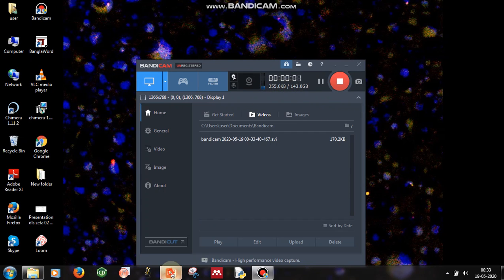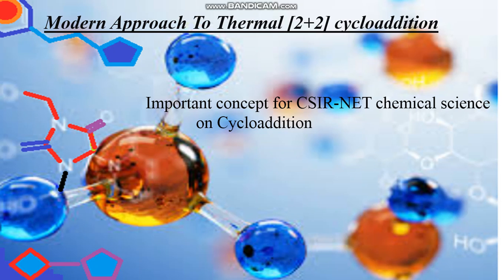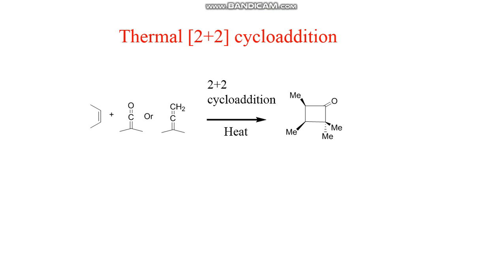Welcome to another video by Bio Organic Hub. In this video we will discuss 2+2 cycloaddition, which is a very important topic for CSIR NET. Many questions come from thermal 2+2 cycloaddition. As you know, normal alkenes don't participate in 2+2 cycloaddition — cyclopentadiene or substituted alkenes participate in 4+2 cycloaddition, but not in 2+2 cycloaddition.